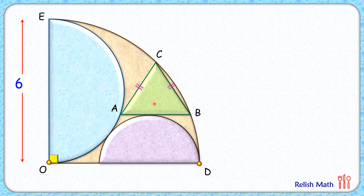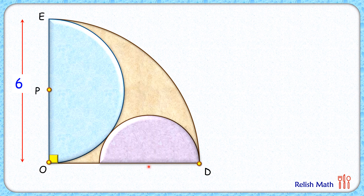To find the radius of the purple circle, we don't need the triangle at present, so let's remove it. Let's assume the centers of the semicircles are point P and point Q. We know that when two circles are touching each other, their centers P and Q and their point of contact lie in a straight line. So let's join PQ passing through this point of contact.